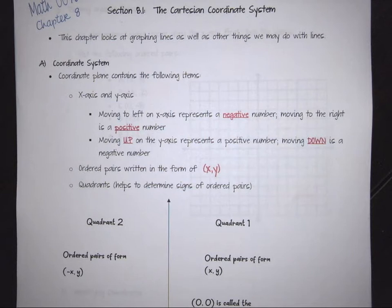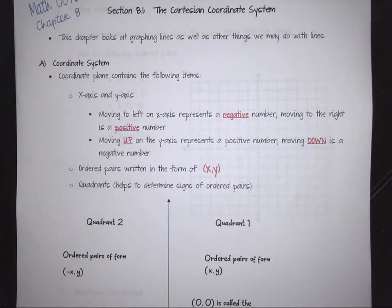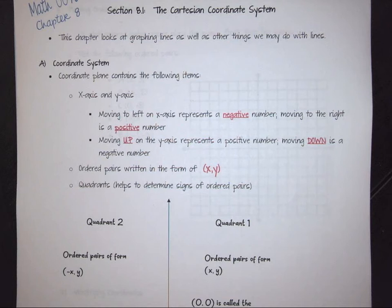In this video we're going to look at the beginnings of the coordinate system as well as the beginnings of how to graph. The first thing you have to pay attention to when dealing with the coordinate system is knowing what your coordinate planes are and how they work. When we're talking about a coordinate plane, we are talking about the x and y axis — how we move left and right or up and down.